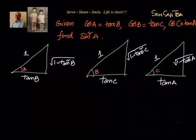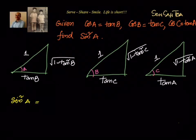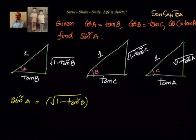For the first step, we look at the first triangle and see that sin A equals the square root of (1 minus tan²B) divided by 1. So sin squared A equals 1 minus tan²B.